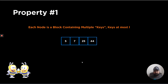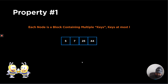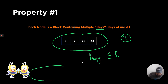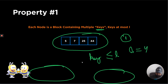The first property is that each node is a block containing multiple keys. Earlier in BST and AVL trees, every node had just one value. But now each node represents a block which can contain multiple values — these values are called keys. The number of keys present in a node is at most L, so keys are equal to or less than L. For example, if L equals 4, one node can have four values, another two, another one, but it can never have more than L values.